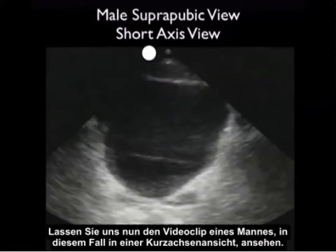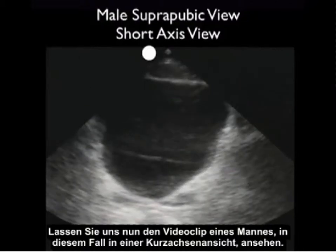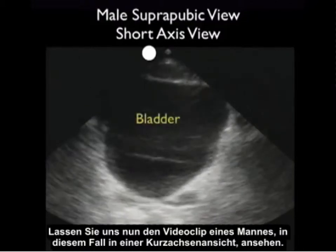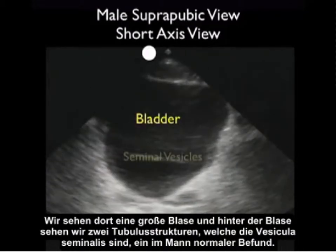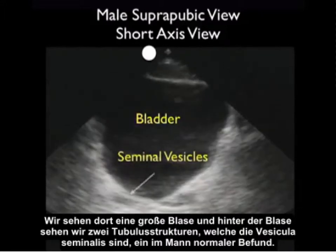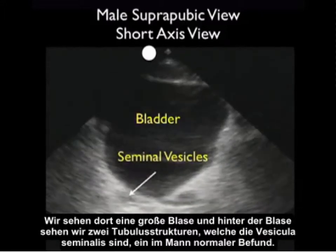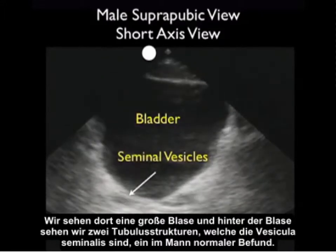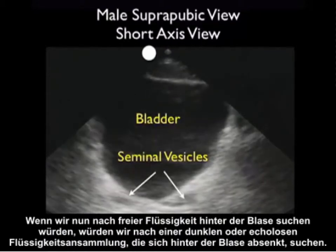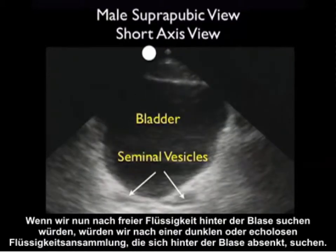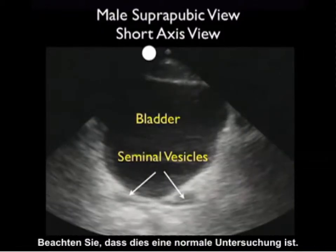Now let's inspect a video clip from a male — in this case a short axis view. We see a large bladder anteriorly, and behind the bladder we see two tubular structures making up the seminal vesicles, a normal finding in a male. If we're looking for free fluid behind the bladder we'd be looking for a dark or anechoic fluid collection layering out behind the bladder. Notice this is a normal examination.